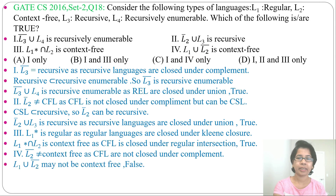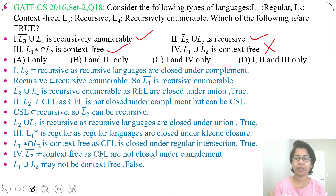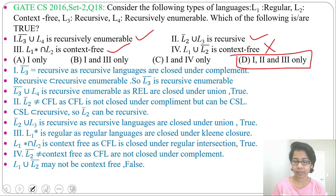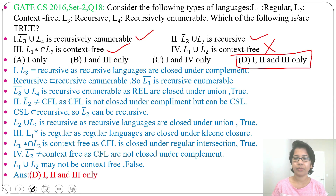We found that statement 1 is true, statement 2 is true, statement 3 is true, and statement 4 is false. Checking which option gives 1, 2, and 3 — that is option D: one, two and three only. So the answer is D. Thank you!